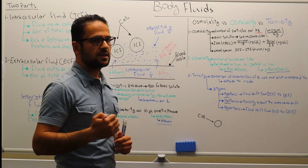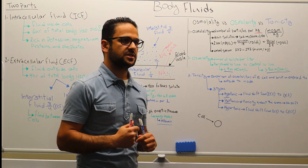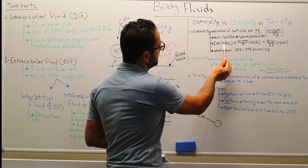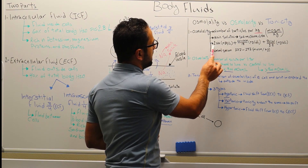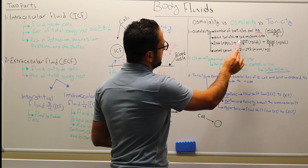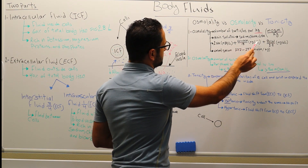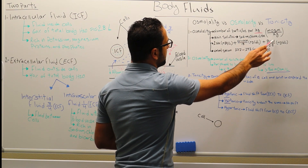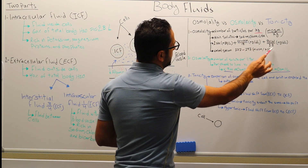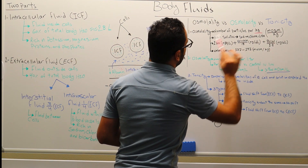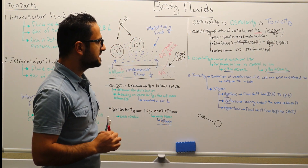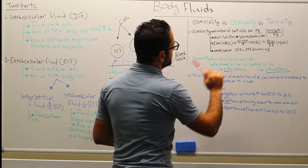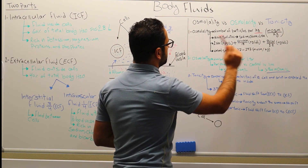To calculate osmolality for a patient, you take their sodium (mEq/L) multiplied by two, plus glucose (mg/dL) divided by 18, plus blood urea nitrogen (mg/dL) divided by 2.8. The normal serum osmolality is in the range of 277 to 297 osmol per kilogram.